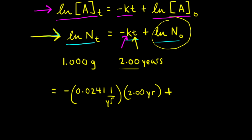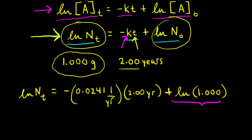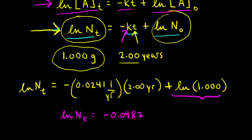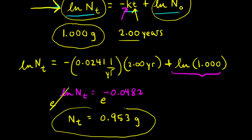The natural log of 1 is zero, so we have ln(N) = −(0.0241)(2.00) + 0 = −0.0482. To solve for N, we take e to both sides, which cancels the natural log, giving us N = e^(−0.0482). That equals 0.953 grams — so that's how much of our Strontium-90 radioactive isotope remains after two years.